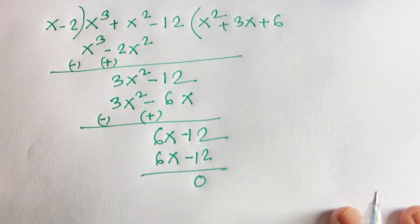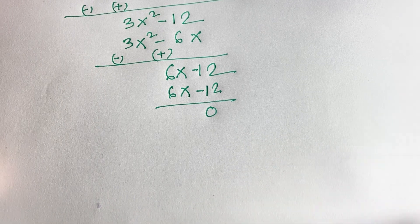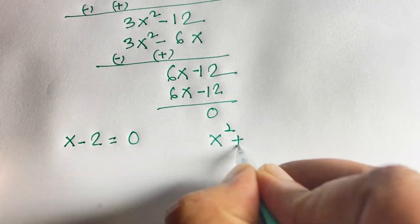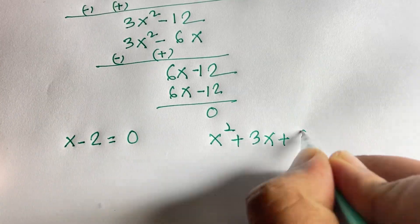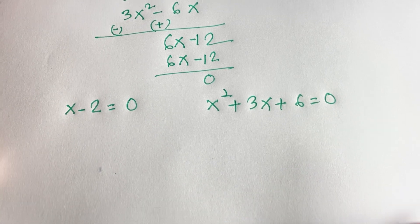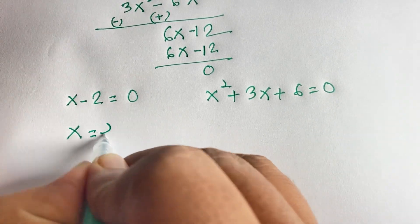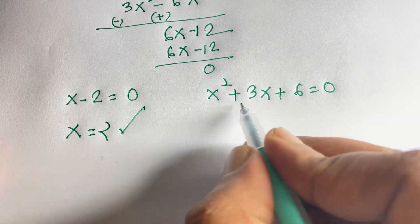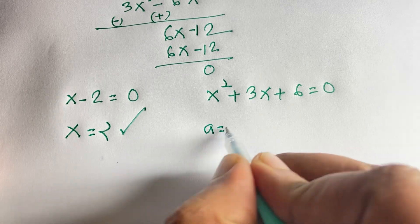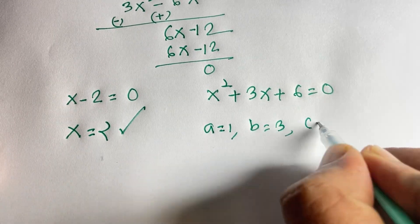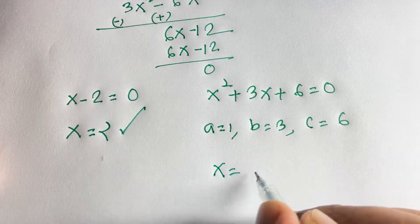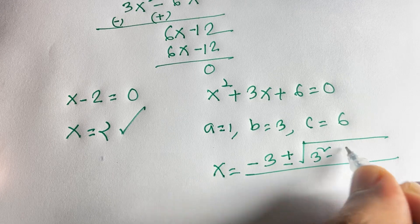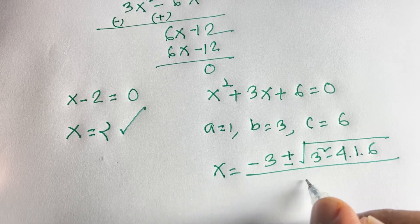At this point, x minus 2 equals 0 gives x equals 2, and the other factor gives x squared plus 3x plus 6 equals 0. This is a quadratic equation where a equals 1, b equals 3, and c equals 6. Using the quadratic formula: x equals minus b plus or minus square root of b squared minus 4ac, all over 2a.